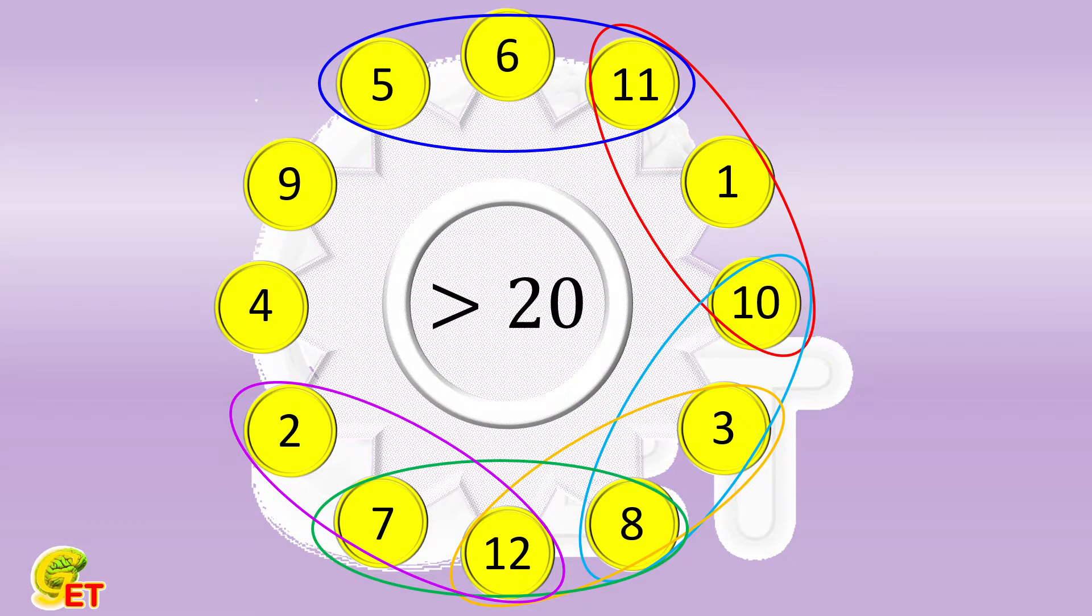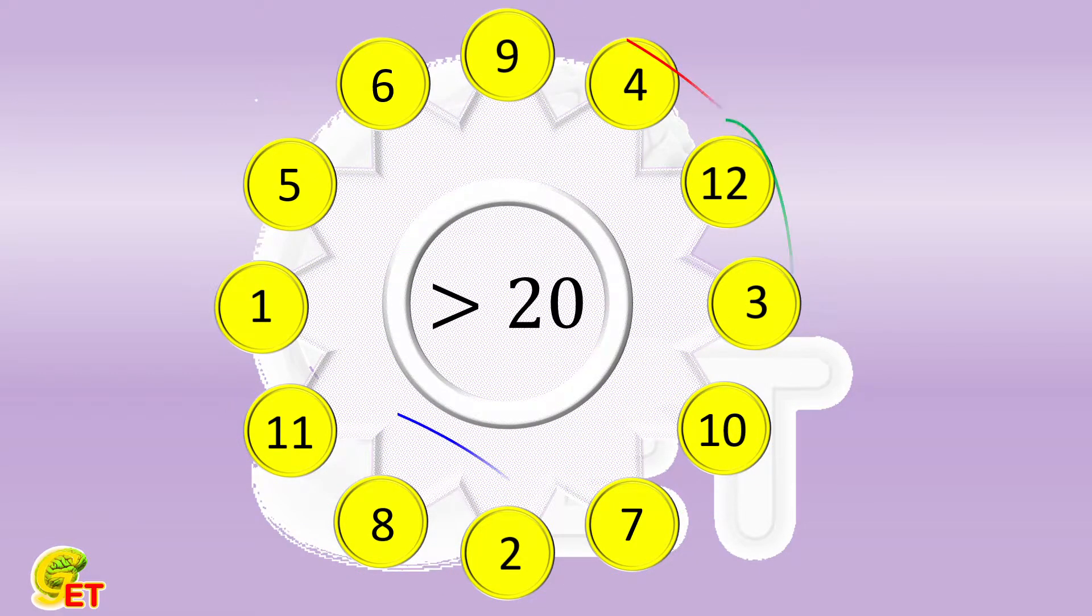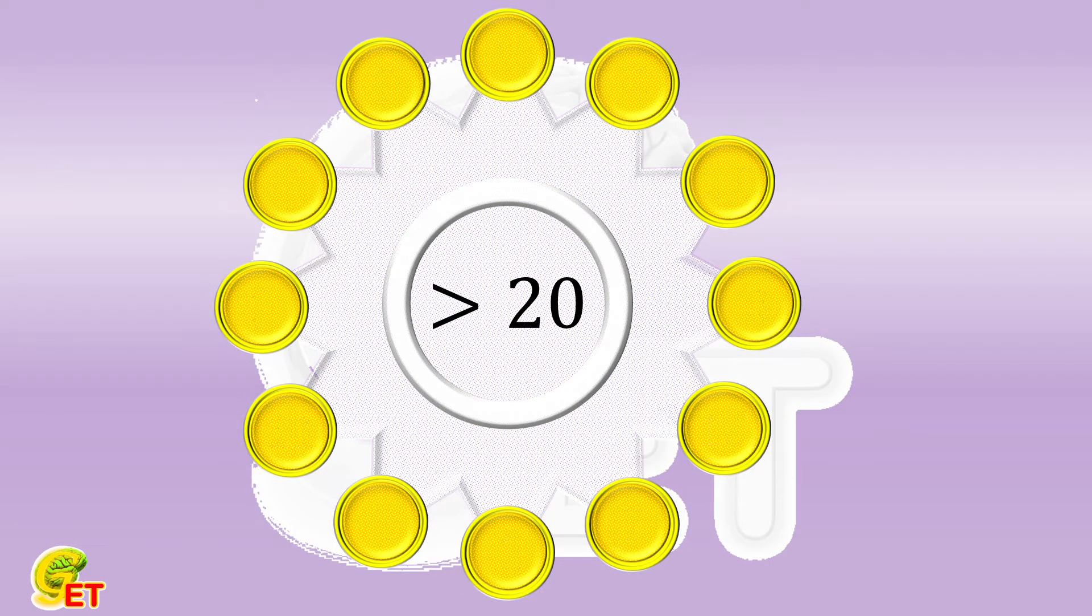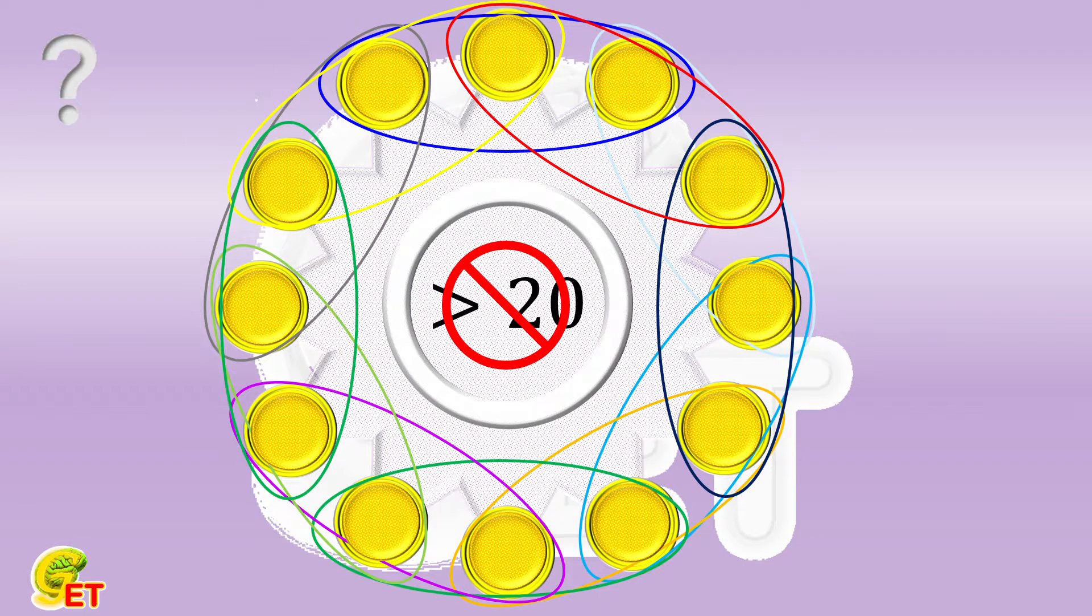If we randomly exchange the positions of the numbers, it is still easy to find some summations bigger than 20. Now here is the question. Can you find a way to place those 12 numbers so that the summation of every 3 consecutive numbers is not bigger than 20? Why not give a try, and we will come back soon.